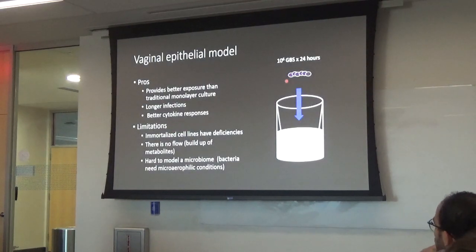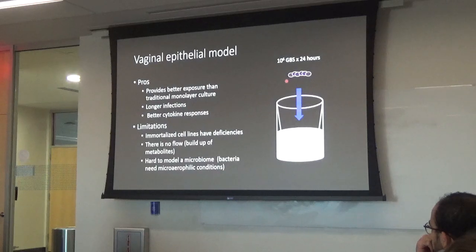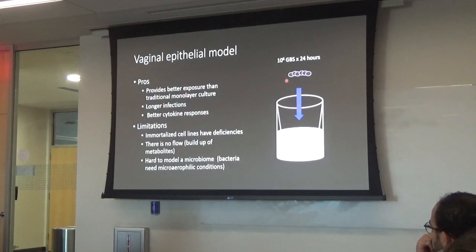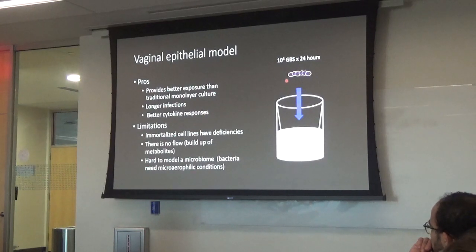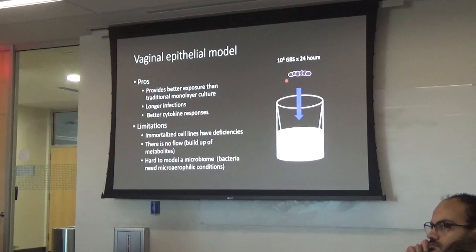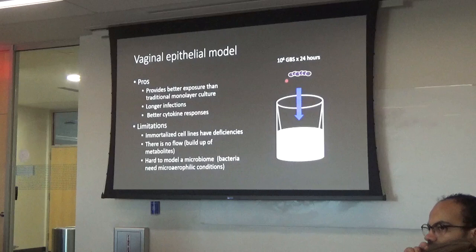Pros and cons of the vaginal epithelial transwell model: Pros — it gives better exposure than traditional monoculture, we can do longer infections and get better cytokine responses. Limitations — these are still immortalized cell lines, not primary cells, so they have some deficiencies. There's no flow, causing buildup of metabolites. And it's hard to model a true microbiome because many bacteria need different conditions than cell culture requires, especially for the microaerophilic conditions that exist in small subsets on the epithelial cell surface.